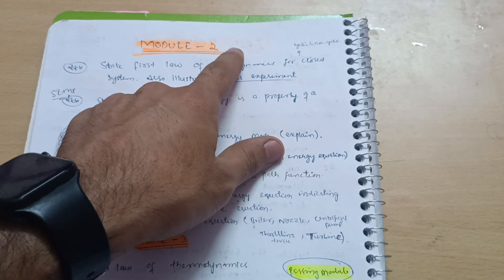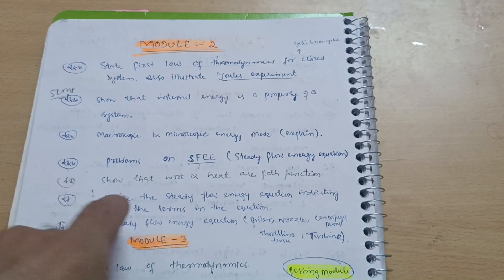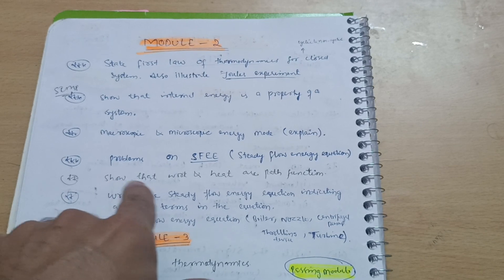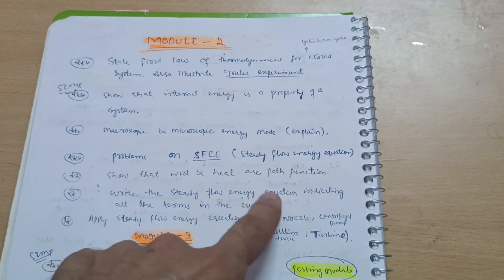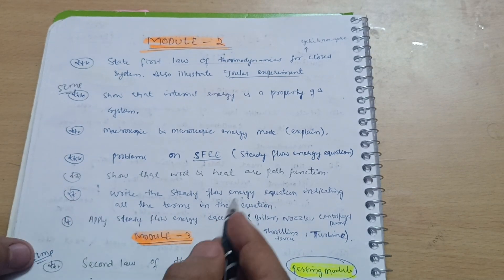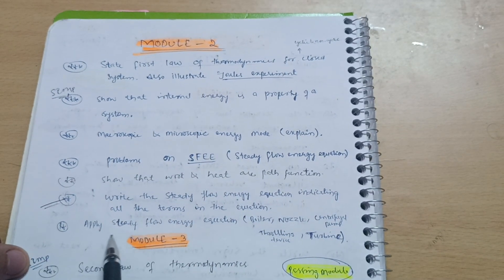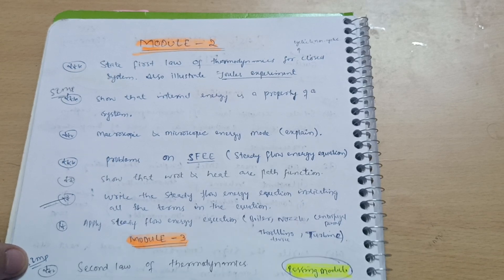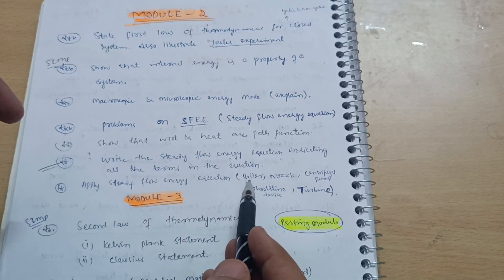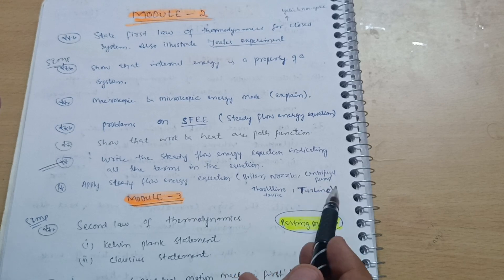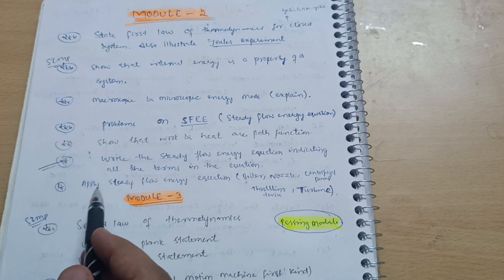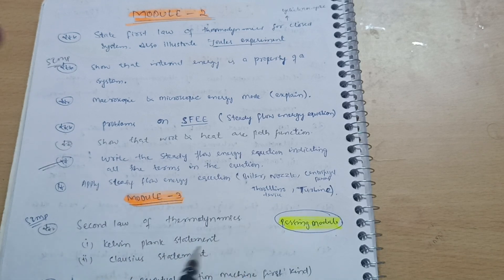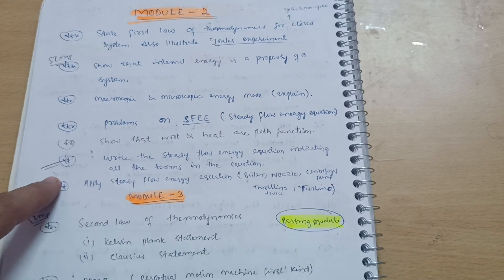Module 2 has some theory concepts, which is why I didn't mark it as a passing module, as most students rely on theory only. Another question: show that work and heat are path functions. Write the steady flow energy equation indicating all the terms. Next: apply the steady flow energy equation to devices — boiler, nozzle, centrifugal pump, throttling device, and turbine. For these five devices you have to apply SFEE to get the required equations. This covers Module 2.